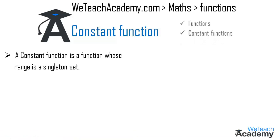A constant function is a function whose range is a singleton set, and a singleton set is a unit set that contains only one element. Now let me explain this concept with the help of an example.